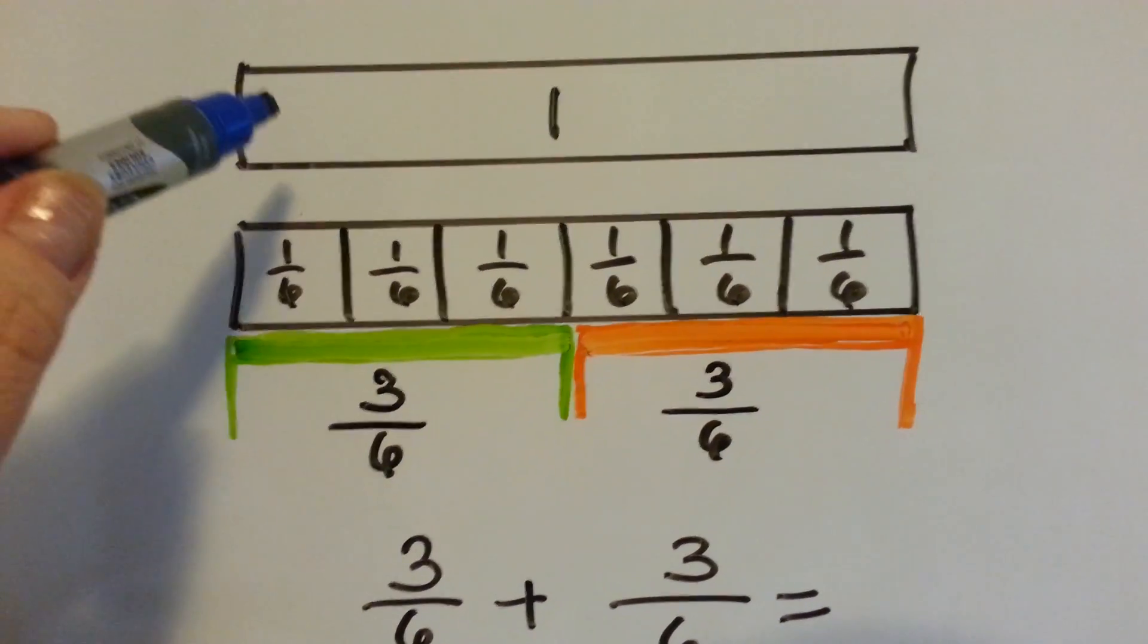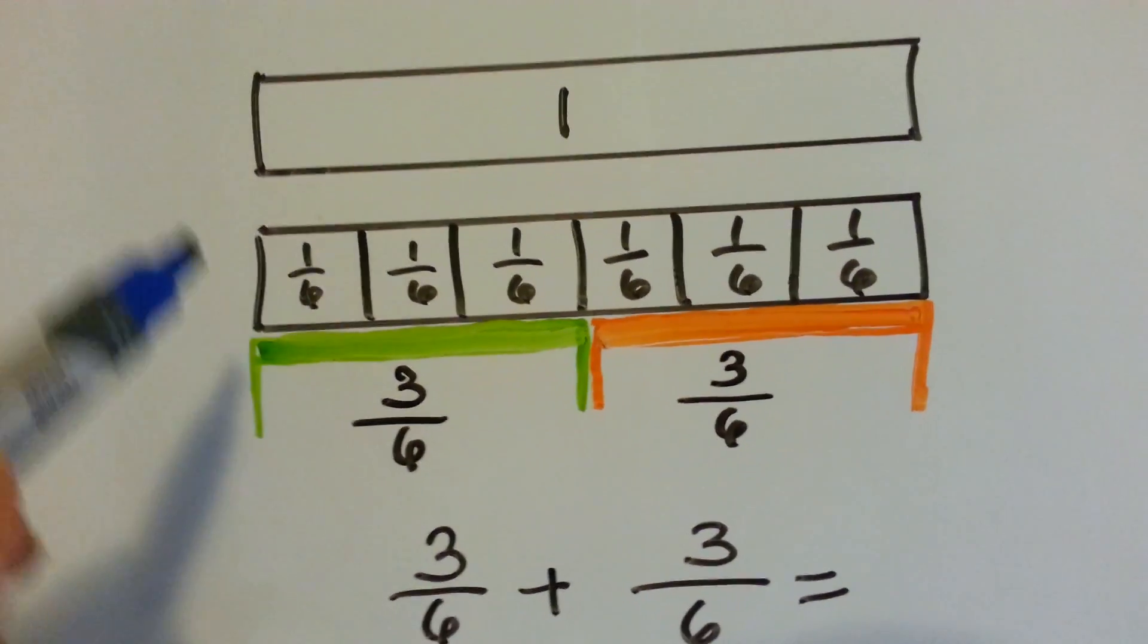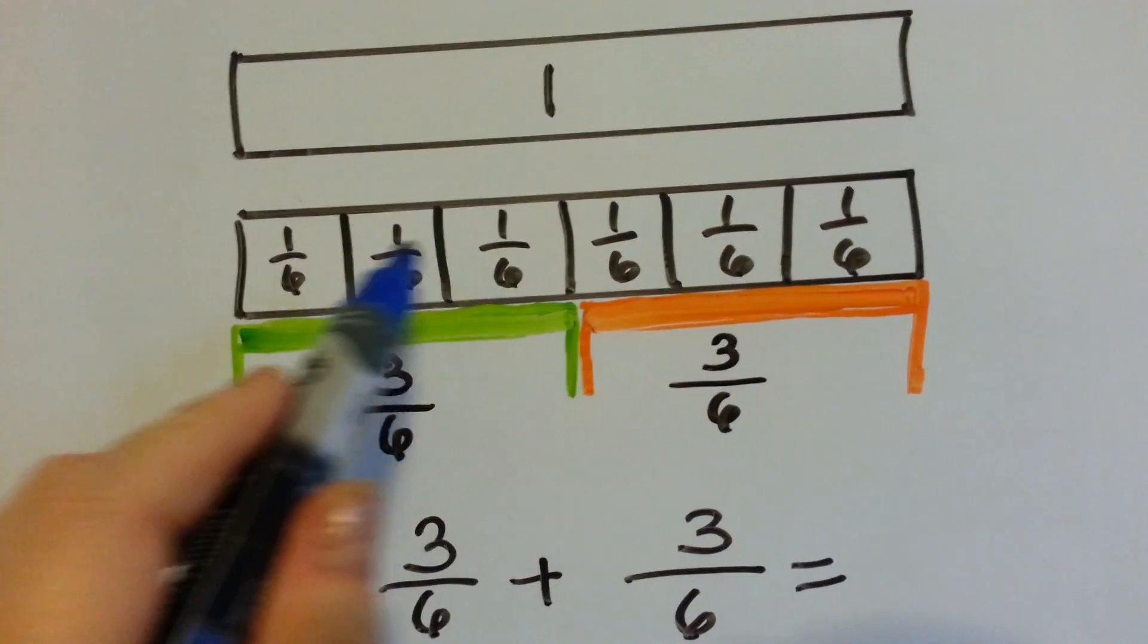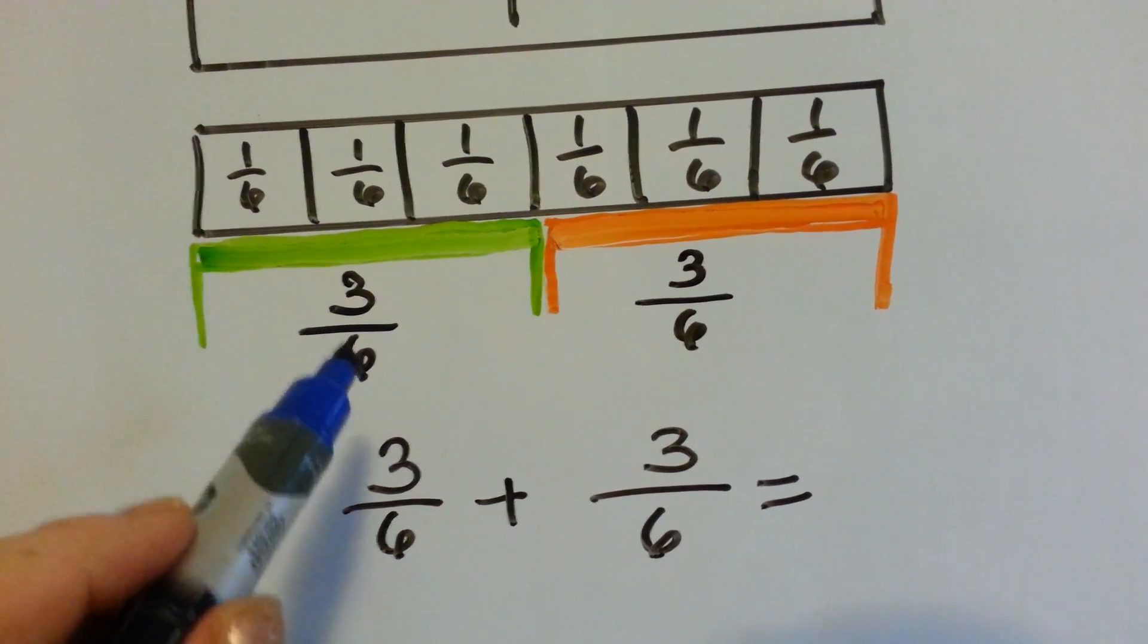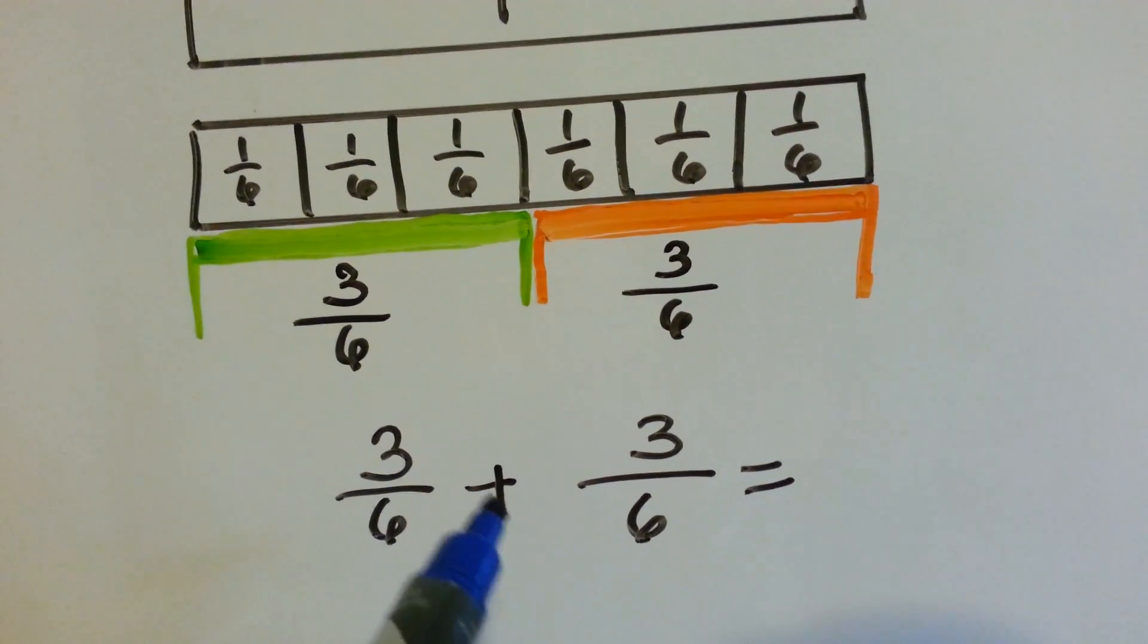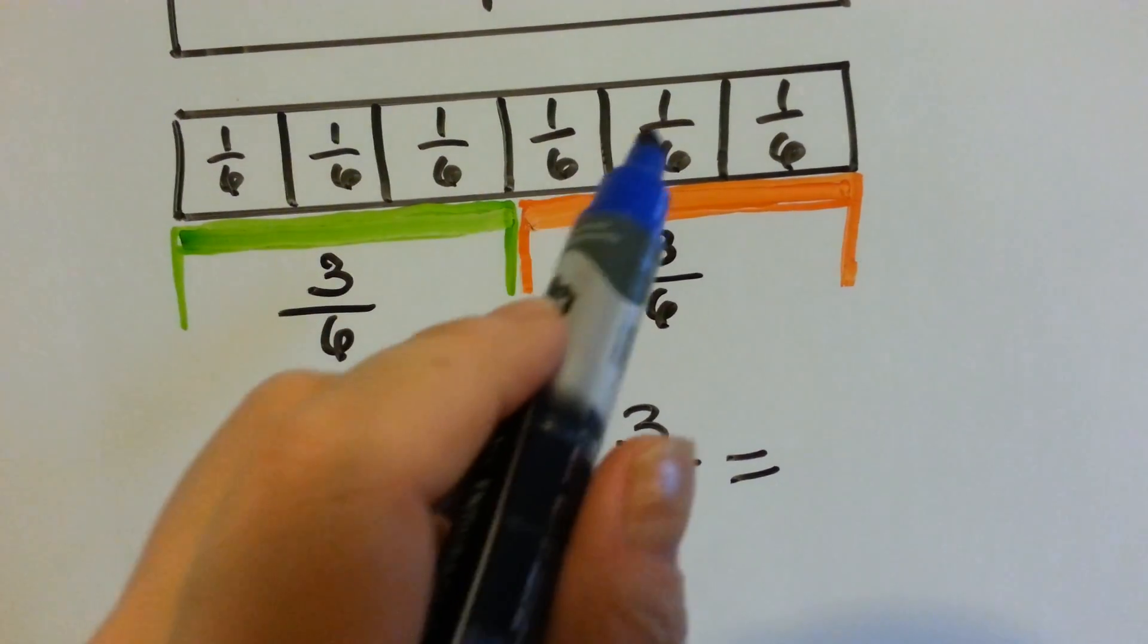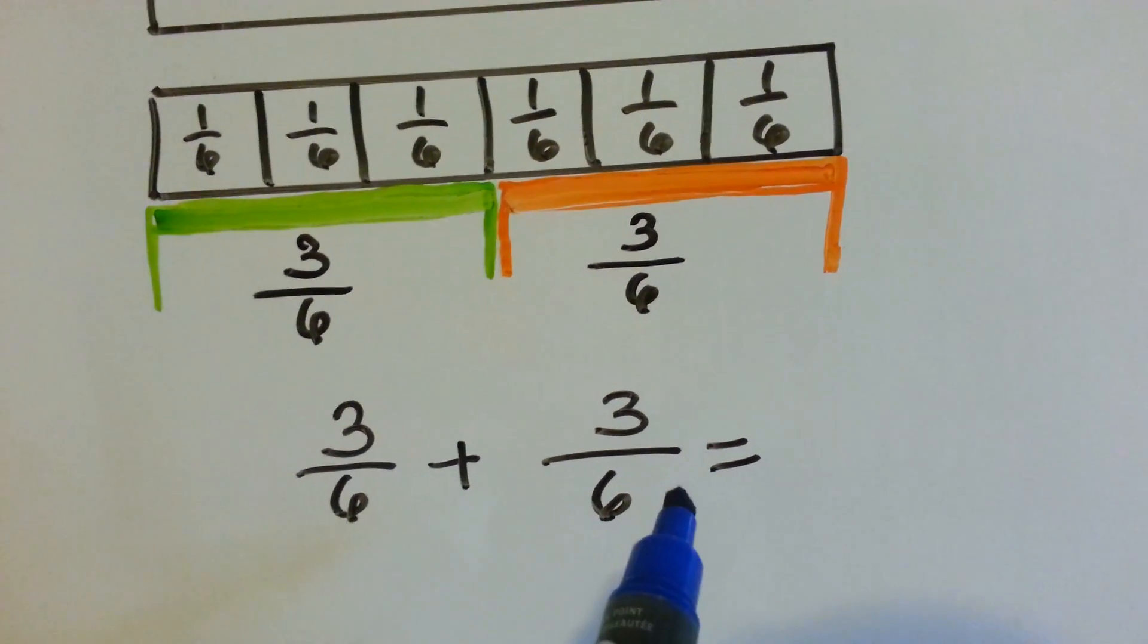This is what one whole looks like before it gets cut. This is what it looks like when it's cut into 6 pieces. 3 sixths of it, 1, 2, 3, plus 3 sixths of it, 1, 2, 3, is equal to how many sixths?